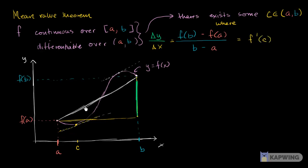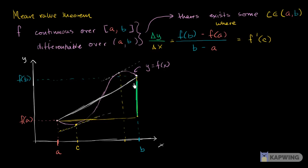That's all it's saying. And as we saw in the diagram, this could be our c, or this could be our c as well. So when you see the notation — f is continuous over the closed interval, differentiable over the open interval — all it's saying is that at some point in the interval, the instantaneous rate of change is going to be the same as the average rate of change over the whole interval. In the next video we'll try to give a real-life example of when that makes sense.